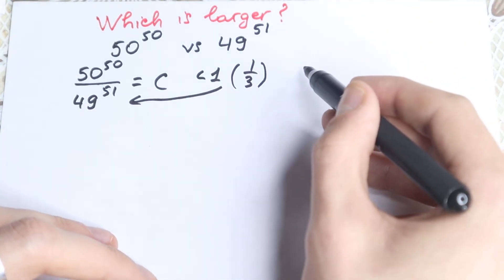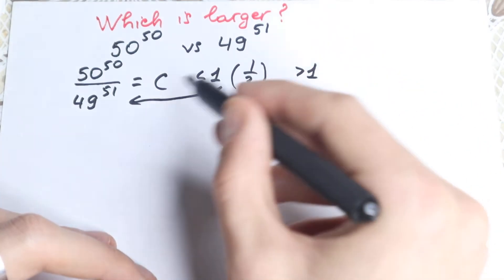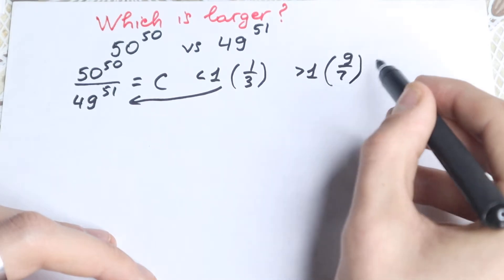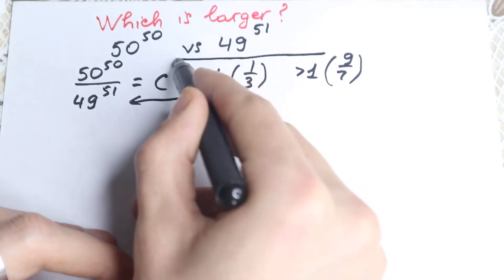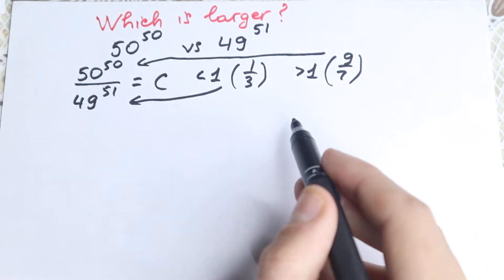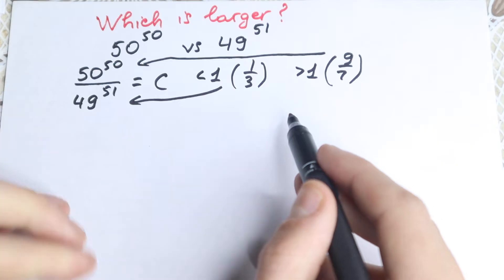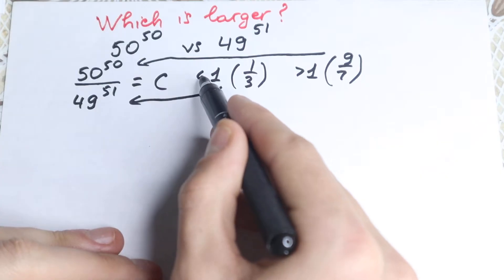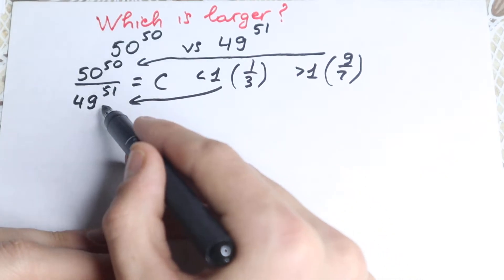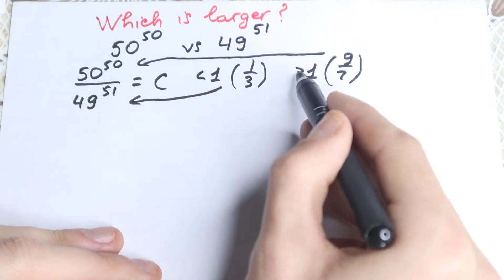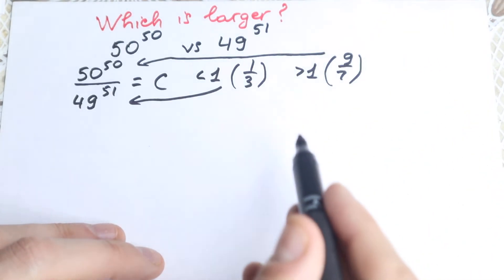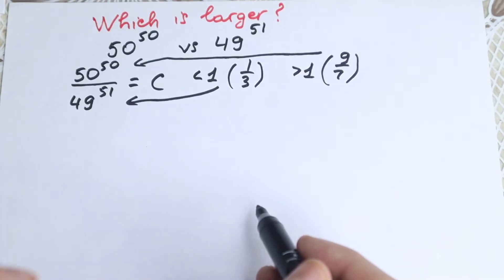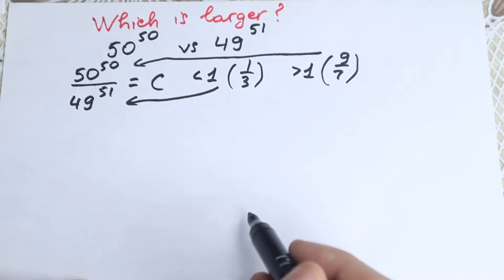But in the same case, if our number c is greater than 1 — for example we have 9 over 7 — we can easily say that 9 is greater than 7, so our numerator will be greater. So: if the division is less than 1, the denominator is greater; if the division is greater than 1, the numerator is greater. This is a really important step — maybe the most important step in this question.